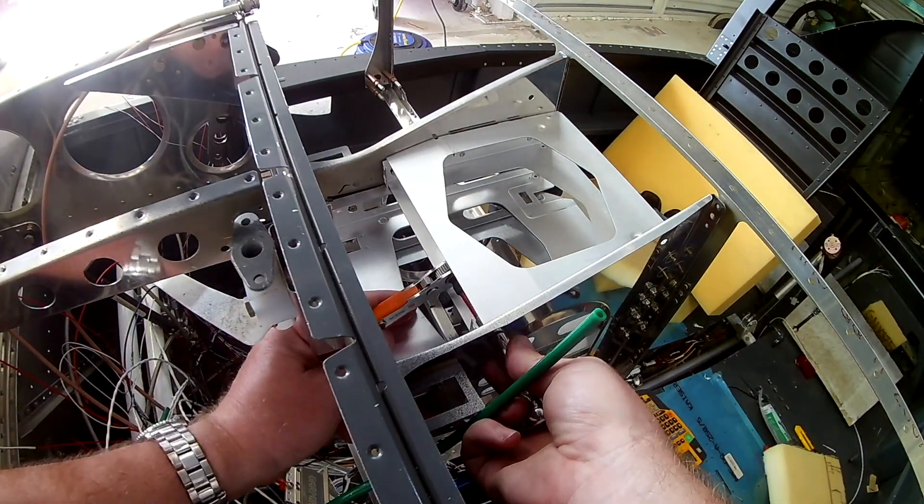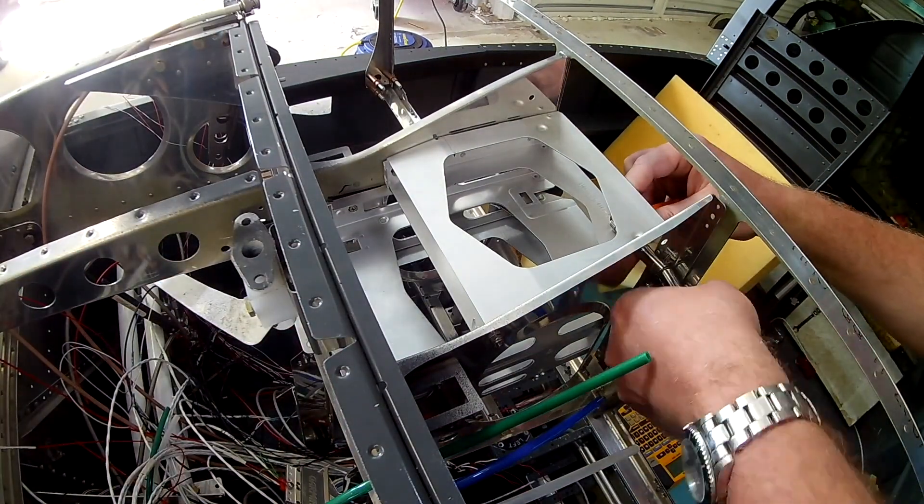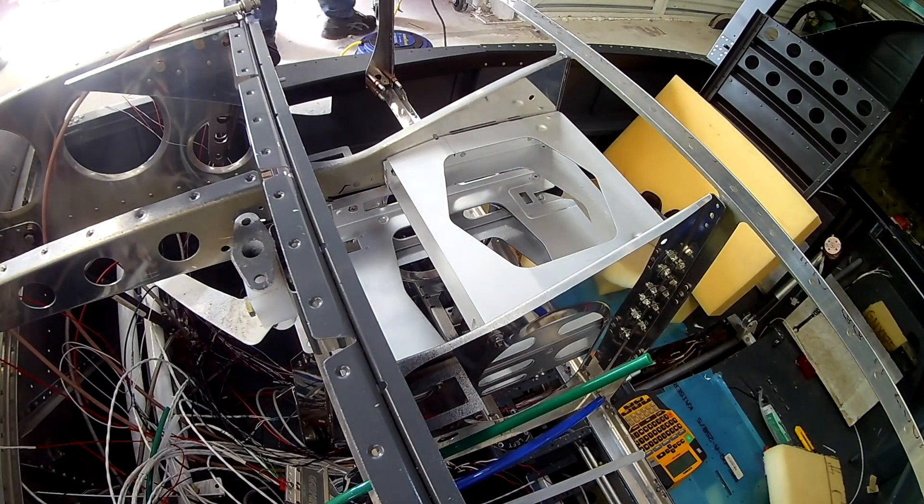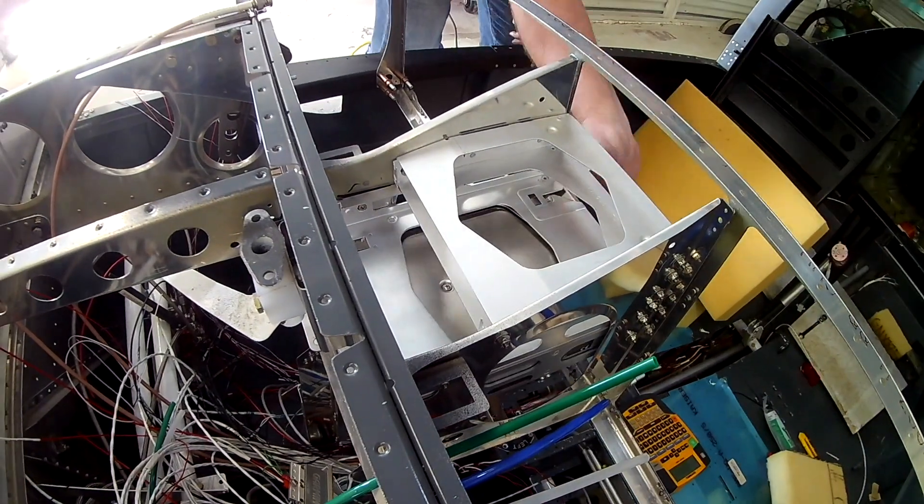Alright, so we've pretty much got them locked in place. Those back screws, as you can see there, can be a little bit difficult to get to. I've got a tiny little 90 degree screwdriver, which you need. Now that these are in place, you can see the avionics slide right on in.